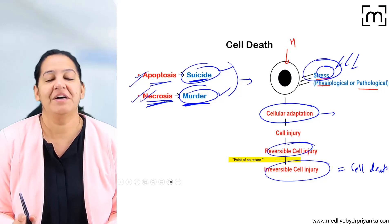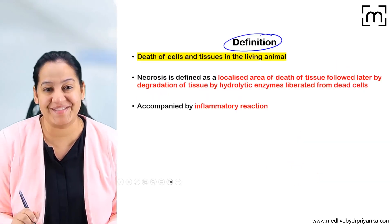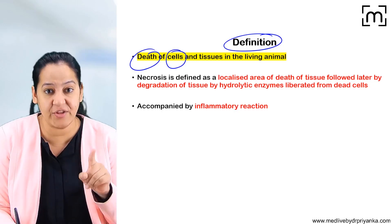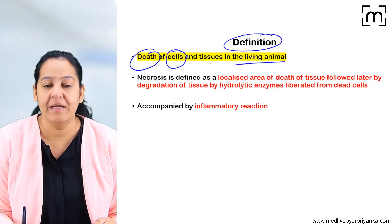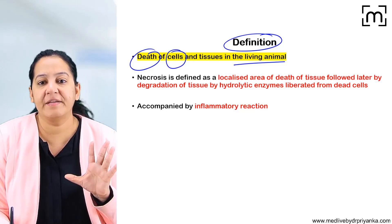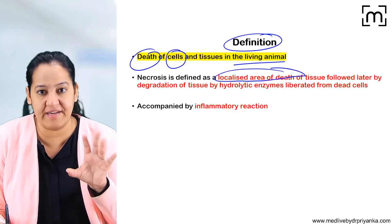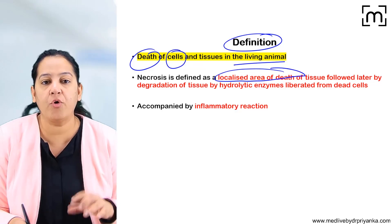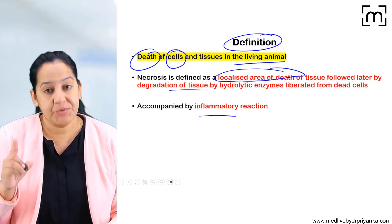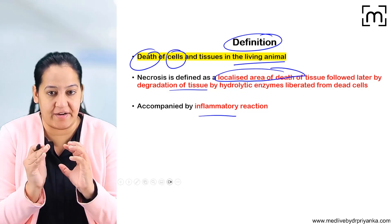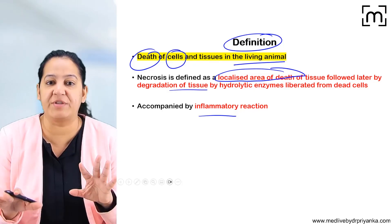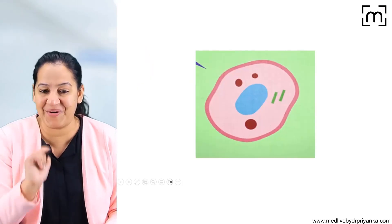In this session we are going to cover the murder — the murder is necrosis. The apoptosis is already covered in one of the sessions; you must watch that also. Watch the suicide and murder back to back — the two sessions together — and you will have a better understanding. So, necrosis: what is the definition? Necrosis is a type of cell death. It is the death of cells in a living animal. There is a localized area of dead tissue.